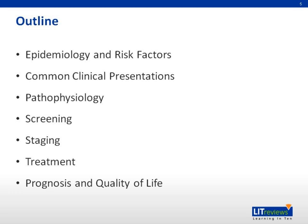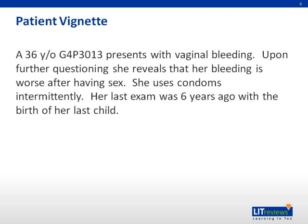An outline for today's talk. We'll begin with a patient vignette. Our patient is a 36-year-old, gravida 4 para 3013, who presents to clinic with vaginal bleeding. Upon further questioning, she reveals that her bleeding is worse after having sex. She uses condoms intermittently, and her last exam was six years ago at the birth of her last child.